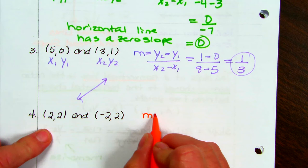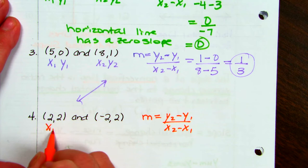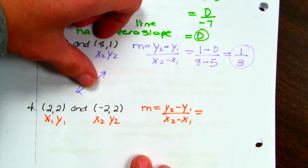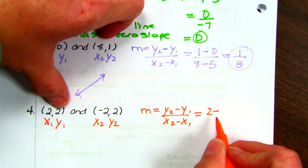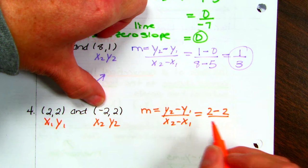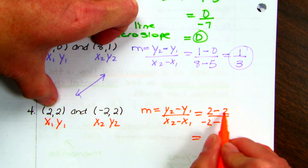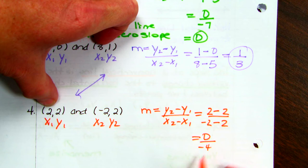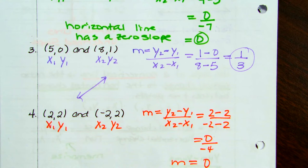For the last one, we have these two points. Write the slope formula and label the two points, then substitute: y2 is 2 minus y1 is 2, and x2 is negative 2 minus x1 is 2. So 2 minus 2 is 0; negative 2 minus 2 is negative 4. So 0 divided by negative 4 is 0 — the slope is 0.